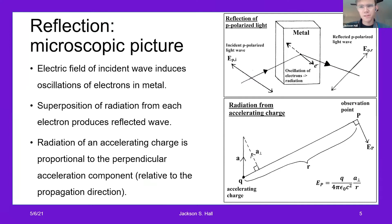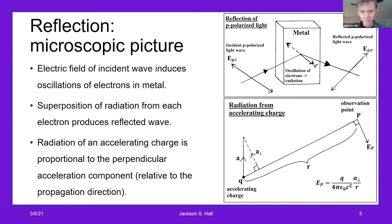It also helps to look at a more microscopic picture of what happens to the electrons in the metal as the light is reflected. The electric field of the incident wave, which is oscillating back and forth perpendicular to the propagation direction, induces oscillations of electrons in the metal. The superposition of radiation from each electron in the metal produces the reflected wave. To further visualize this, consider the radiation from a single accelerating charge shown in the picture on the bottom right, where the charge has an acceleration Q and the radiation is measured at observation point P. The key takeaway is that the electric field radiated is proportional to the perpendicular acceleration component relative to the propagation direction.